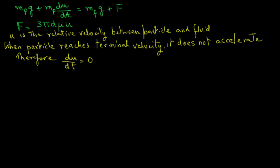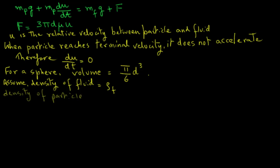So that second term in the equation on the top of the screen will drop out. For a sphere, we know that its volume is pi over 6 times the diameter raised to power 3. Now assume that the density of the fluid is rho f, the density of the particle is rho p, and if we substitute these in our force balance equation...